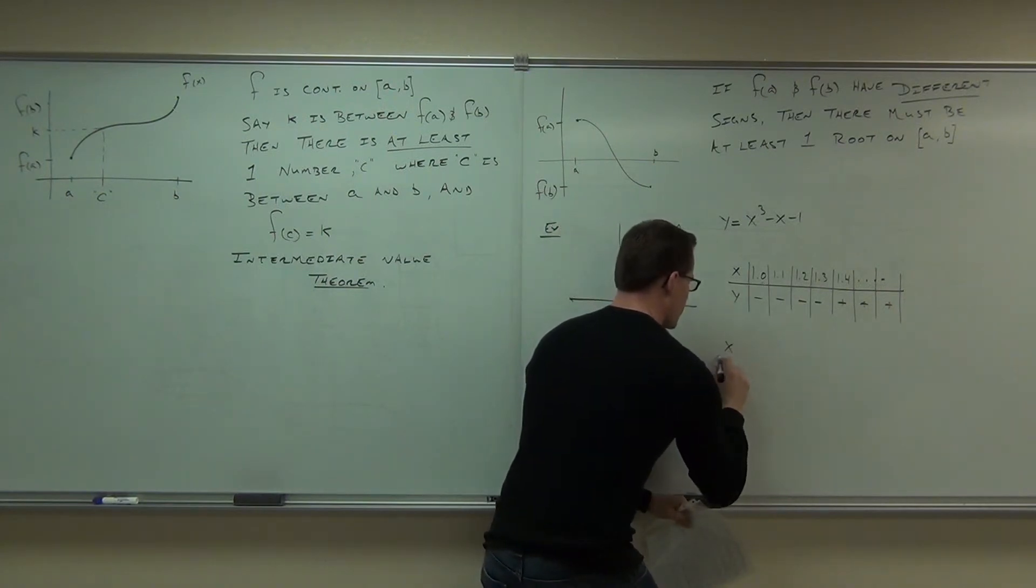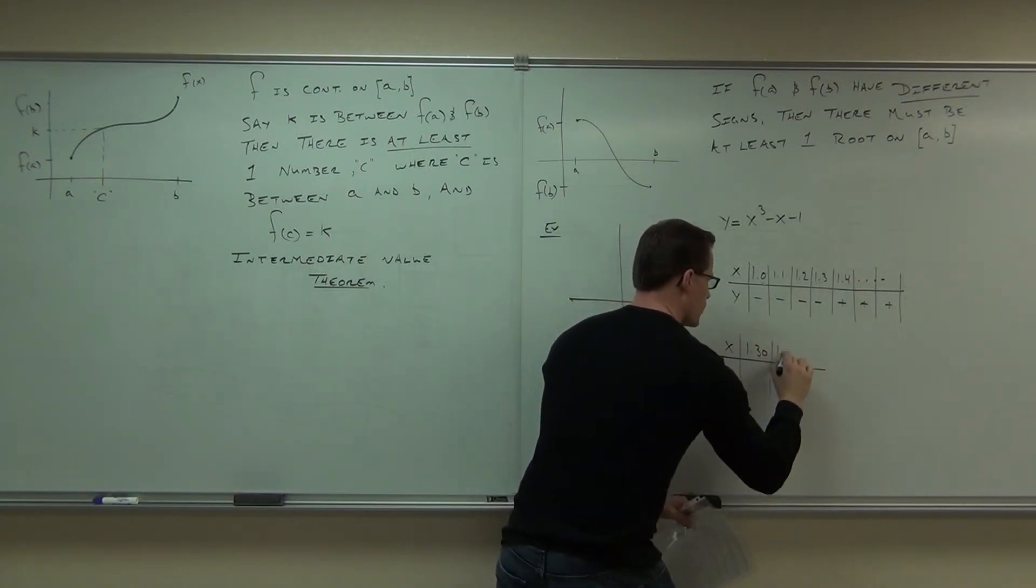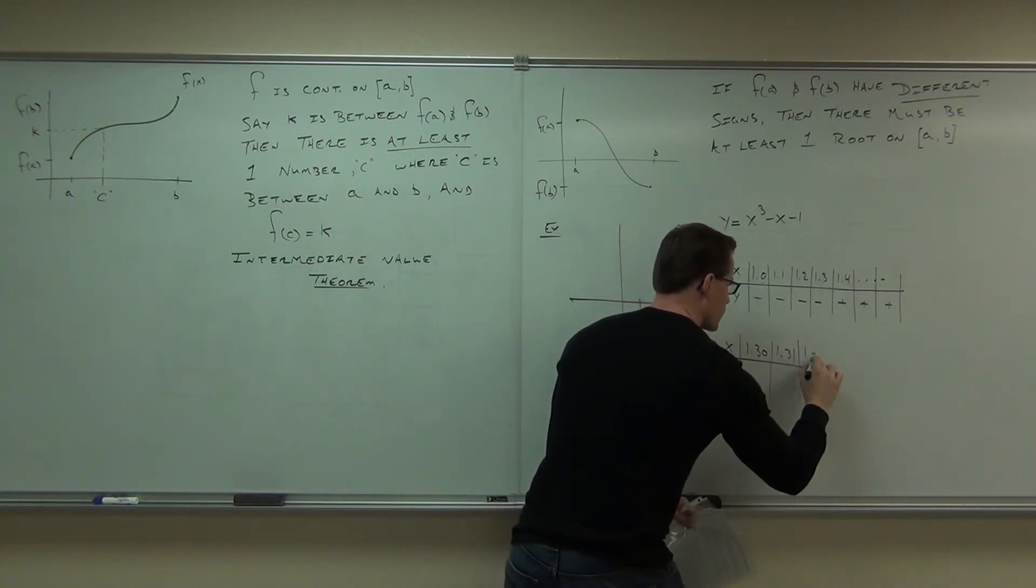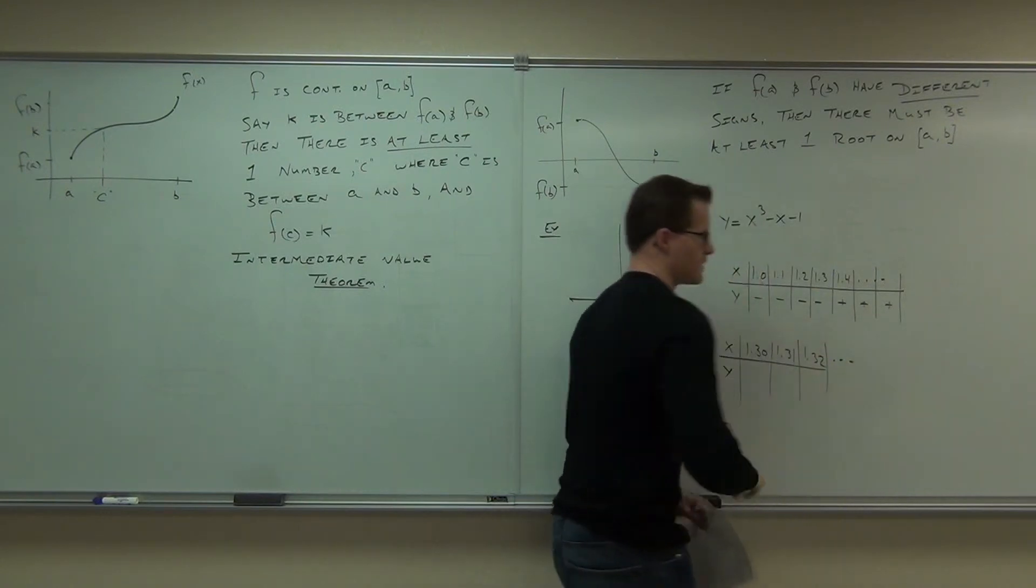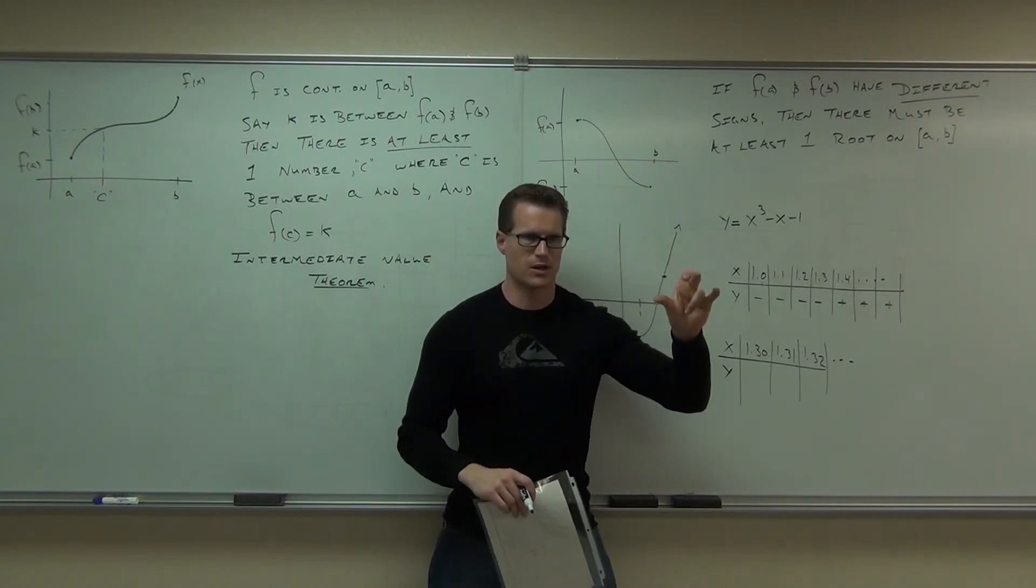X, Y, and you'd start now with 1.30, 1.31, 1.32. And you'd continue that. And then you'd find out which one of those is negative and where the break off is to where it becomes positive.